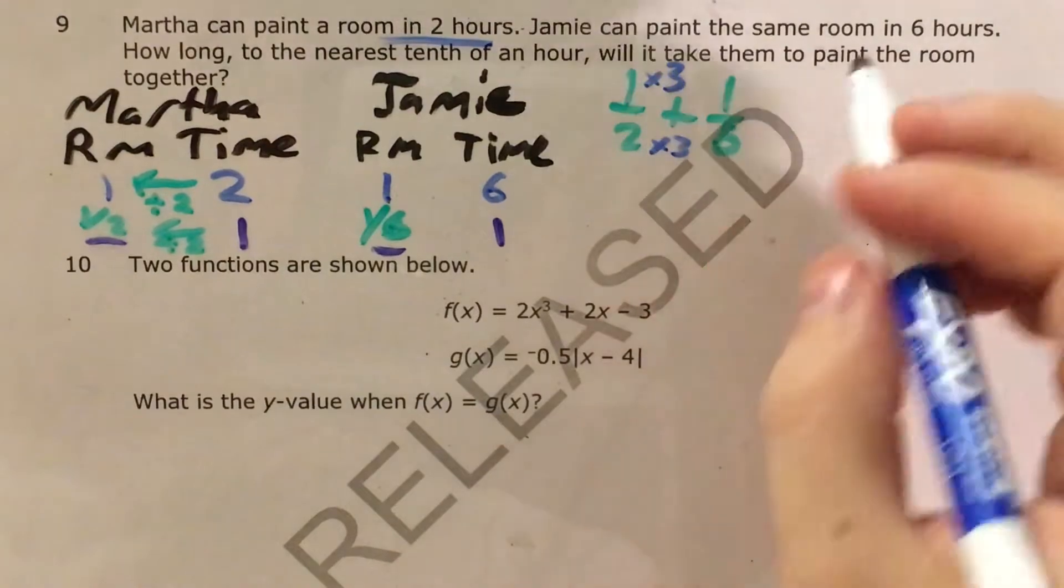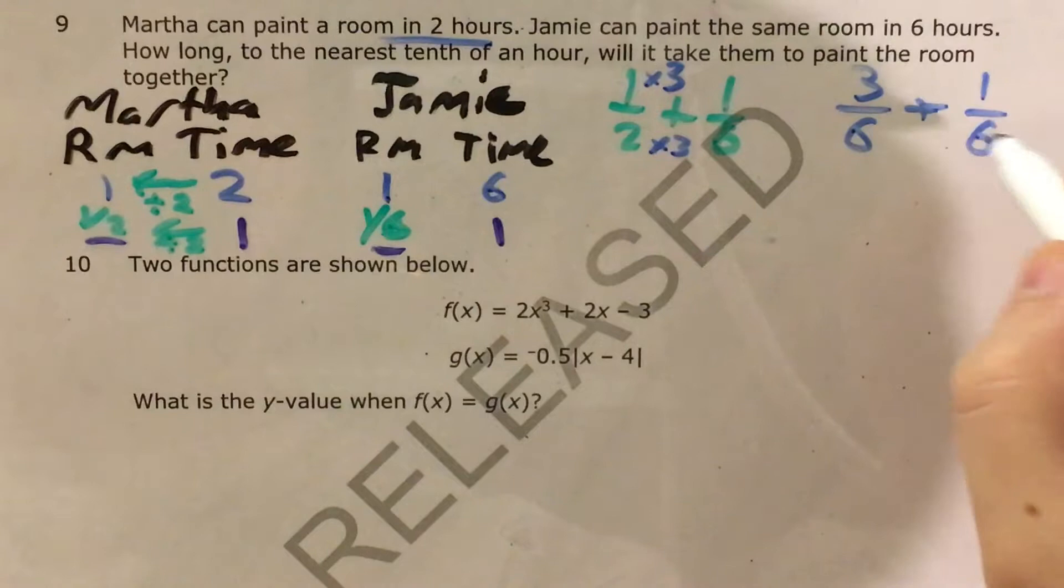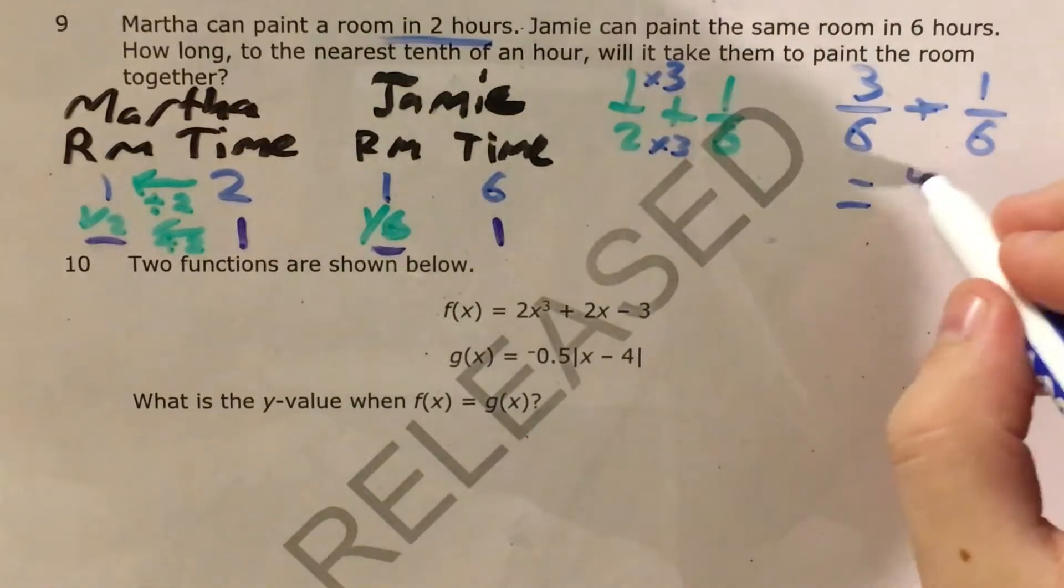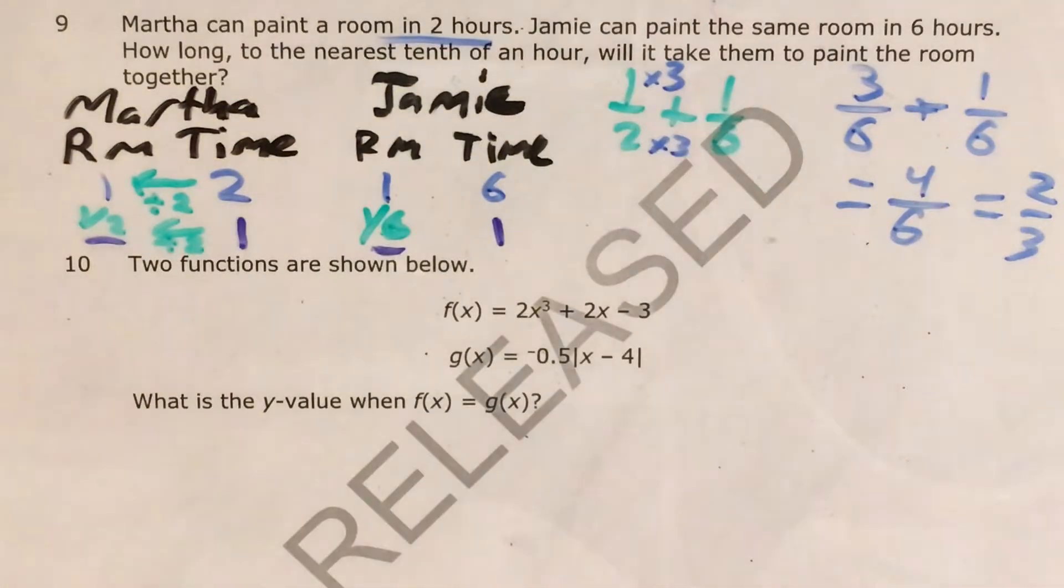So one half plus one sixth is the same thing as three sixths plus one sixth which is four sixths also known as two thirds.